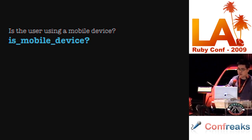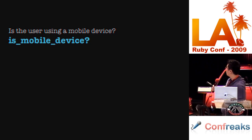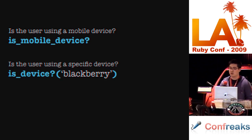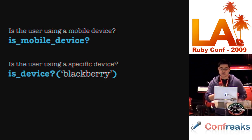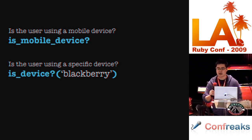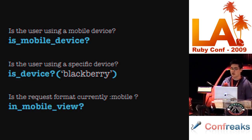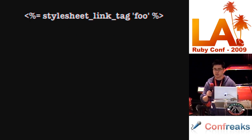Some other class methods in MobileFu: `is_mobile_device?` returns a boolean indicating whether the viewing device is a mobile device. You can also check for a specific device — useful since some phones don't support JavaScript or certain features. And you can check whether the request format is currently set to mobile.